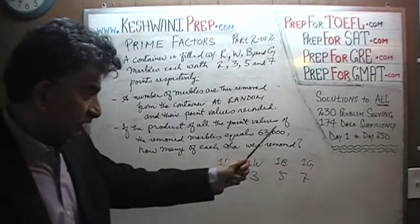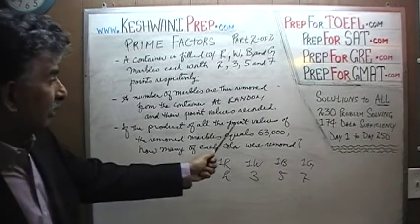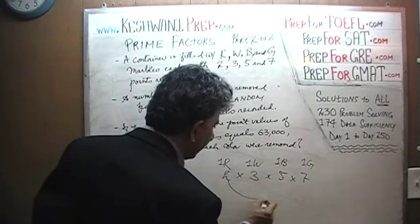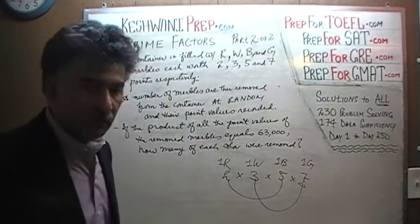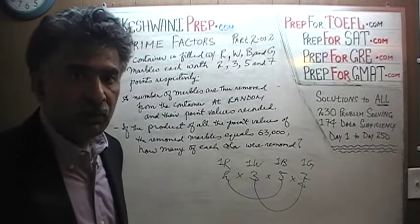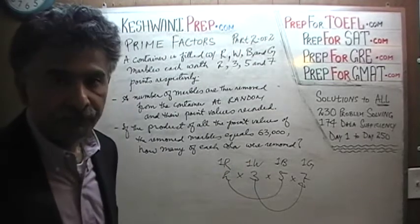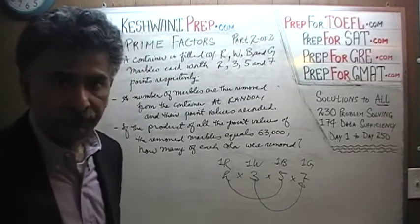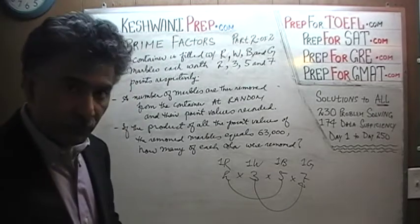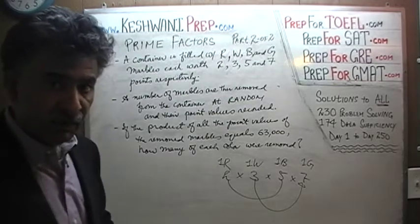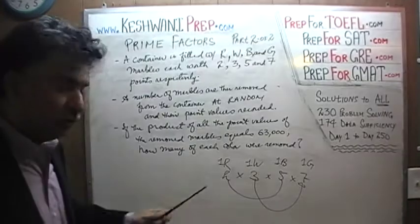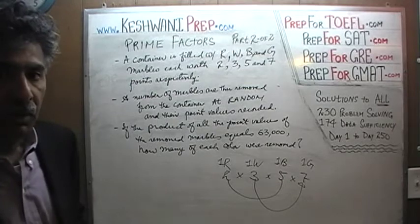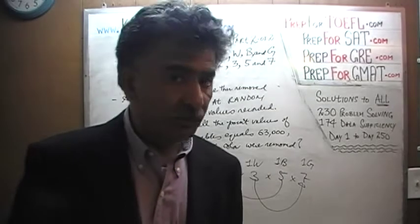For example, instead of 63,000, if we were told the product equals two times three times five times seven — two times five is 10, and three times seven is 21 — the point value would be 210. If the point value happened to be 210, then we would know we must have removed one of each color. Now that you understand the problem, I want you to pause the video, do this problem yourself, and then resume and compare your work against what we are about to do together.